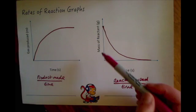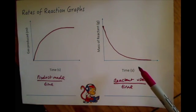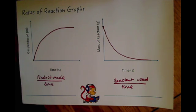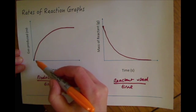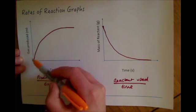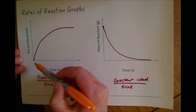You need to be able to read these graphs and interpret what's happening. They might ask you to draw a line on the graph to show a quicker or a slower reaction. Let's start with the graph on the left — if you're asked to draw a faster reaction, think about where you might put that line: should it go above or below the existing one?